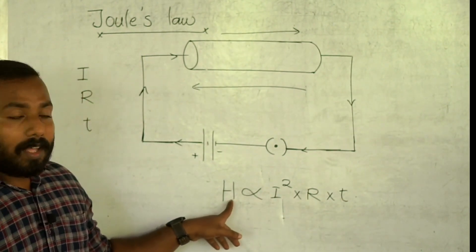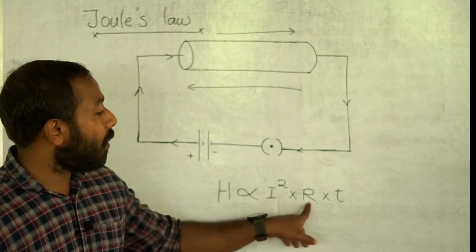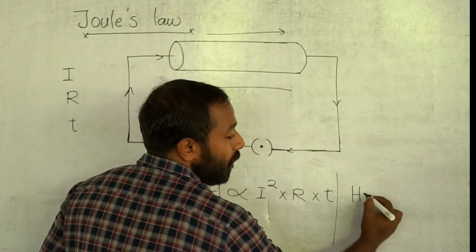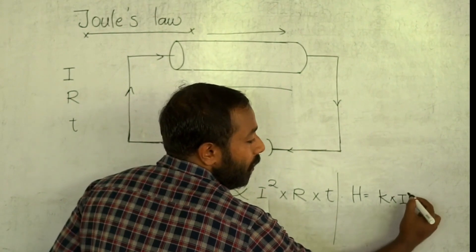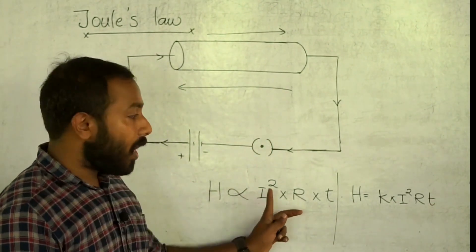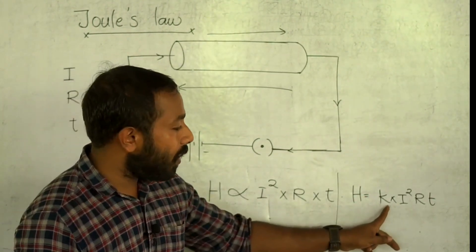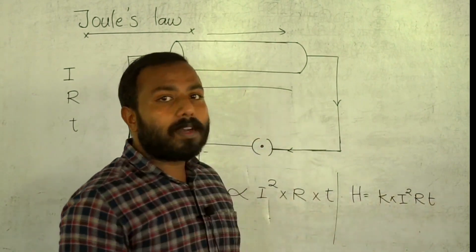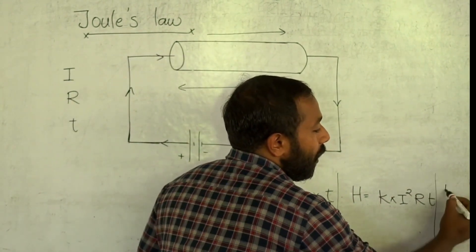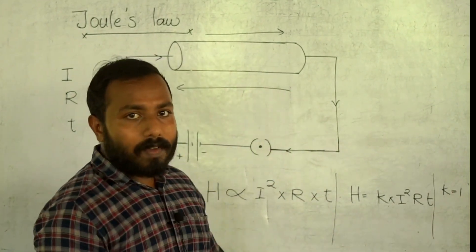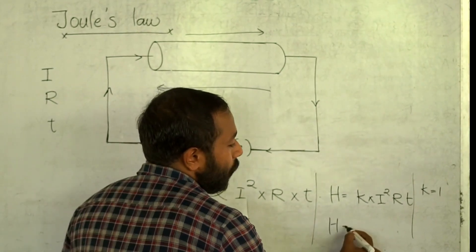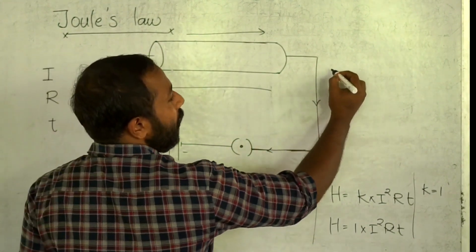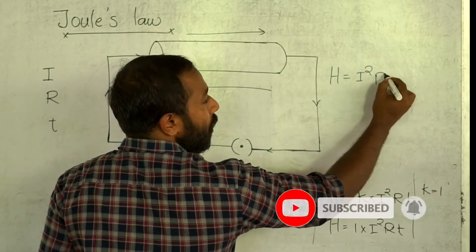That means the proportionality equation is H ∝ I²RT. To convert this to an equation, we multiply by a constant k, giving H = k·I²RT. The value of k is 1, so the final mathematical equation is H = I²RT.